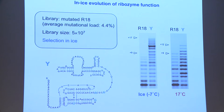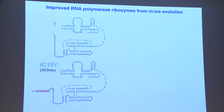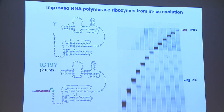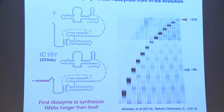When we did that, we ended up with a ribozyme that is not only better than the wild type, but is actually more active when frozen than it is at ambient temperature — it is now perfectly adapted to the ice phase. When we combine this with the hexanucleotide quasi-Shine-Dalgarno sequence discovered earlier, we can now synthesize RNAs that are 206 nucleotides long — the first ribozyme able to synthesize RNAs longer than itself.